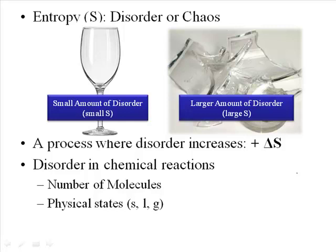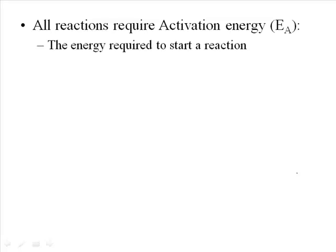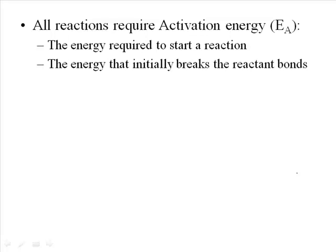So not only do we have to consider enthalpy — the heat of reactions — we also have to consider entropy, or the chaos of a reaction. Finally, the last factor we have to look at in chemical reactions is what's called activation energy. All reactions, no matter what they are, require some amount of activation energy — that's literally just the energy required to get a reaction going. The reason is that initially, the first thing that happens is you have to break up the reactants, changing them from molecules bonded together to a bunch of atoms ready to form product molecules.